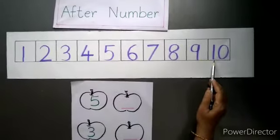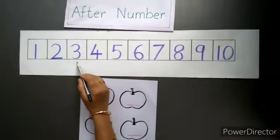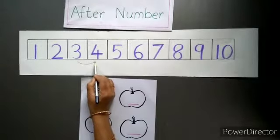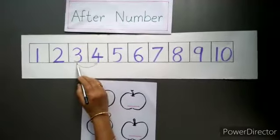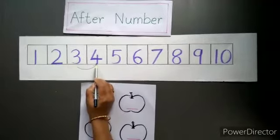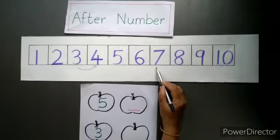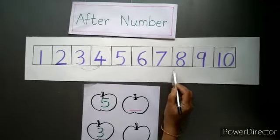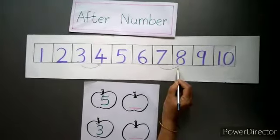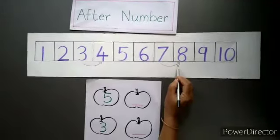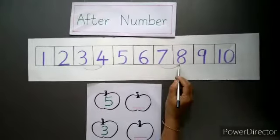If I want to know what comes after number 3, I have to move forward. So after 3, it is number 4. Which number comes after 3? 4. Now if I want to know what comes after 7, I have to move forward. So after 7, it is number 8. After means forward — we are doing forward counting.